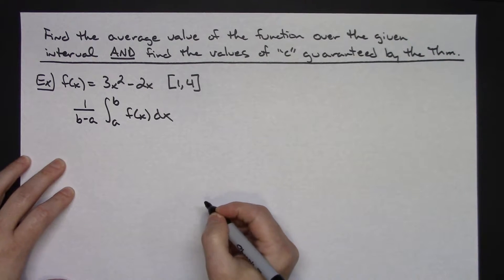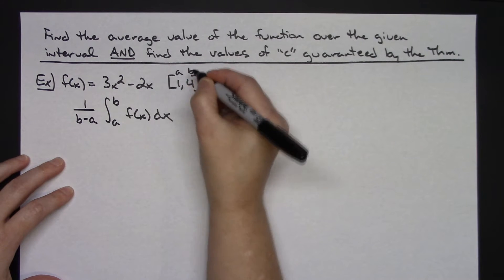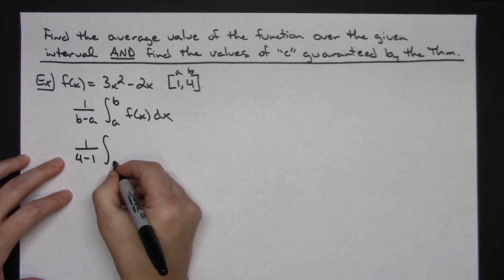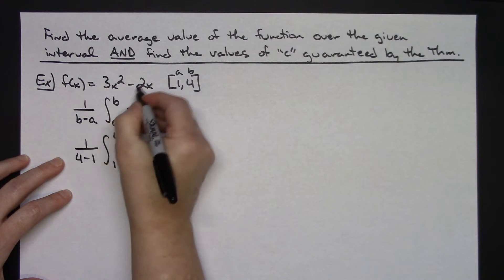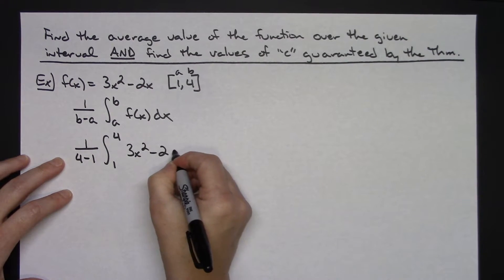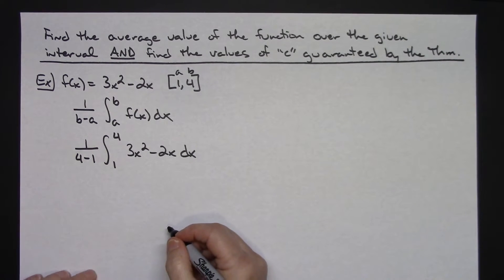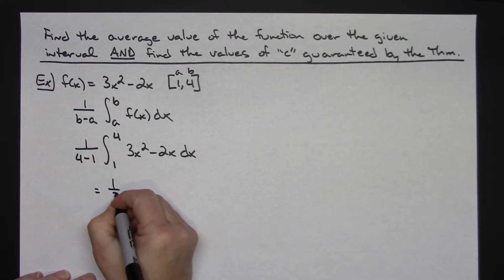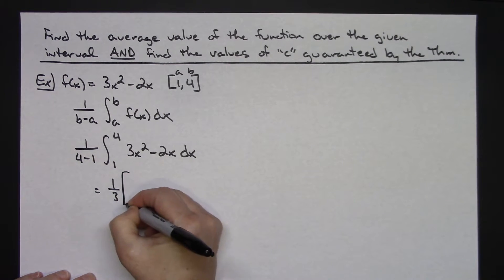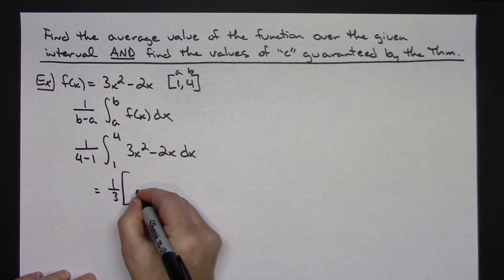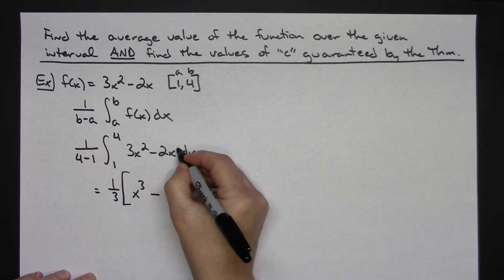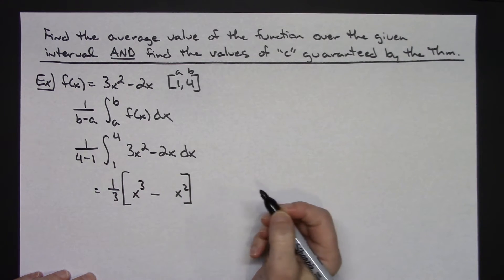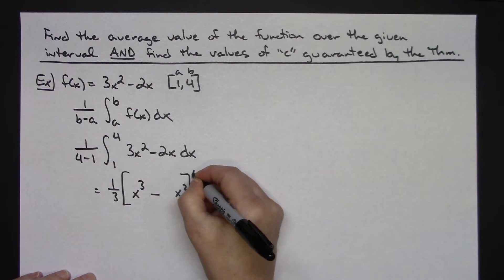I'll write down that formula first, now I'm going to plug in my values. This is a and this is b and that's my function. So it's going to be 1 over (4 minus 1), integrating from 1 to 4 of 3x squared minus 2x dx. I'm going to work this out — straight integration using the power rule. So I'll have a one-third out in front. Integrating: add 1 to the exponent and divide, giving me x cubed. For the second term, that gives me x squared. I will be evaluating this on the interval from 1 to 4.